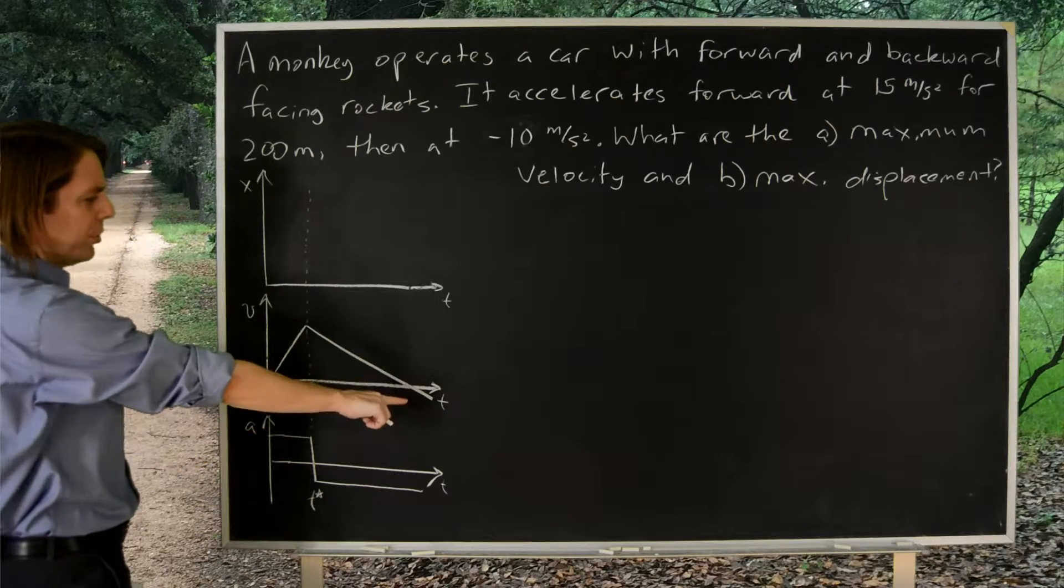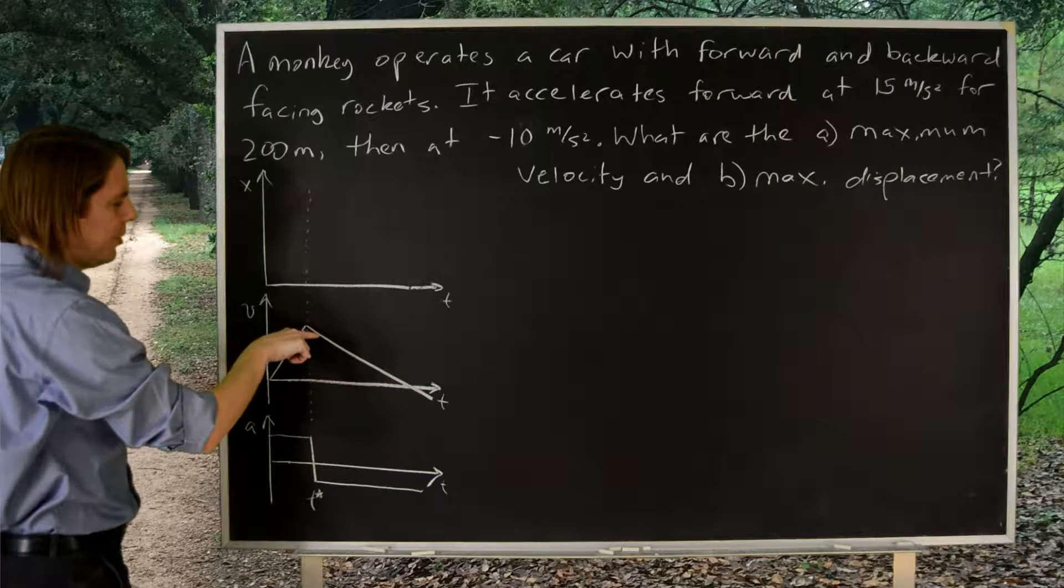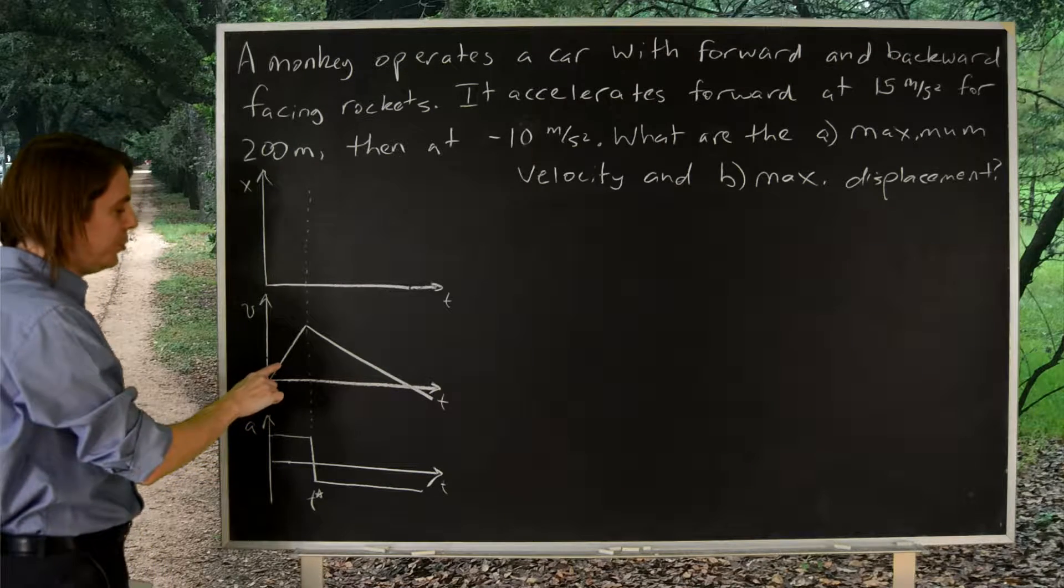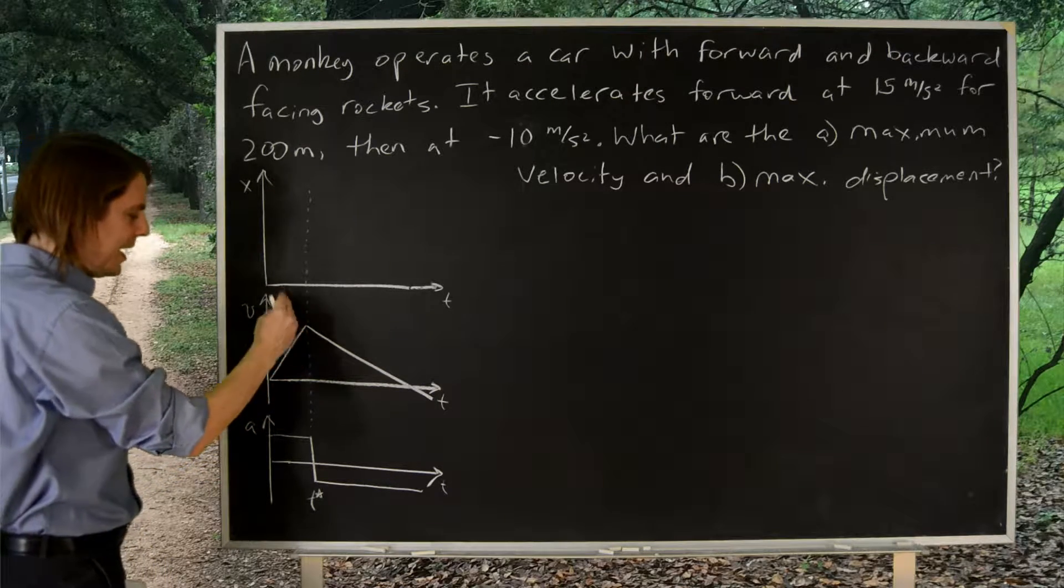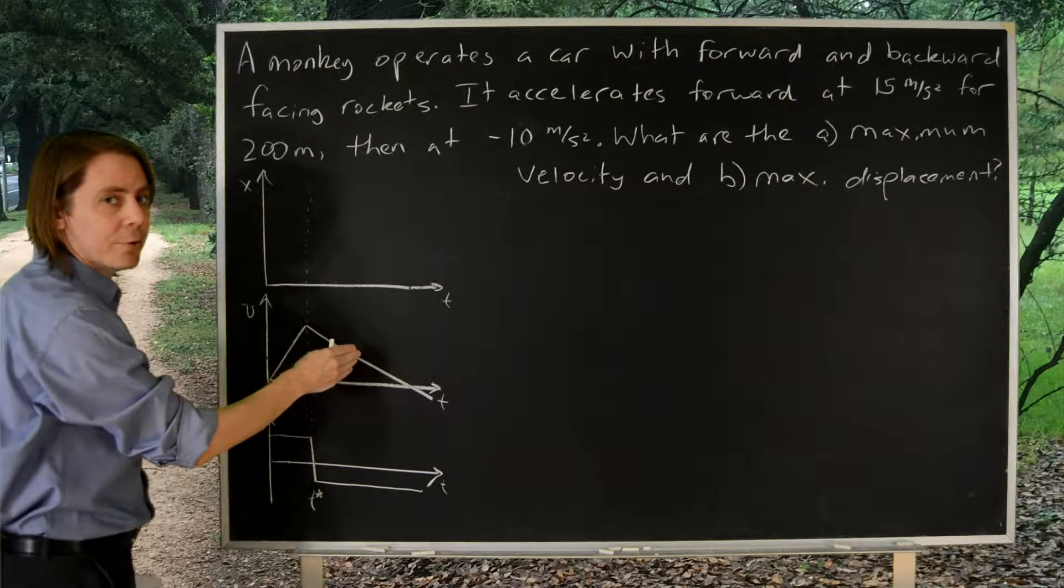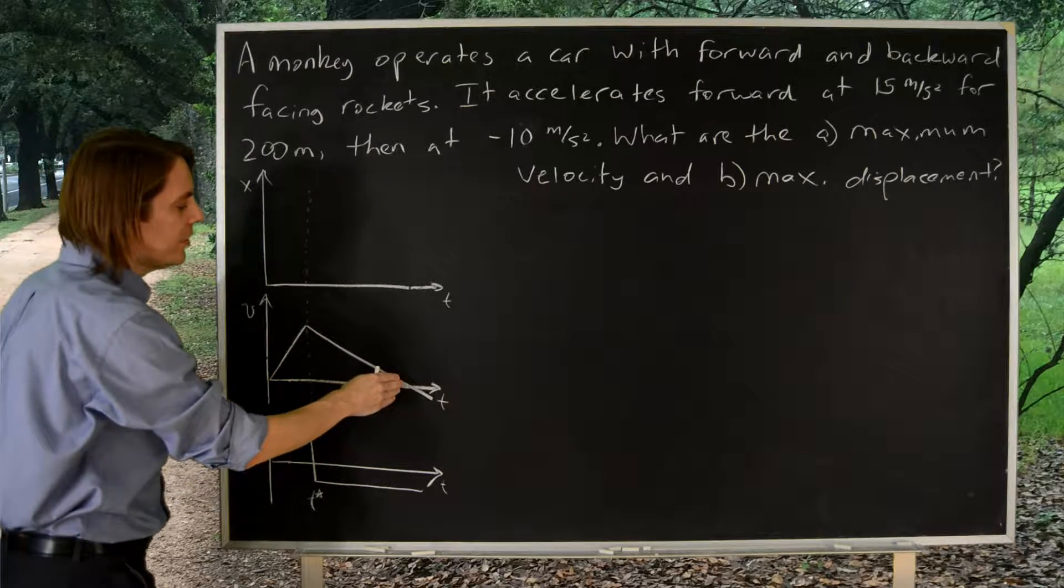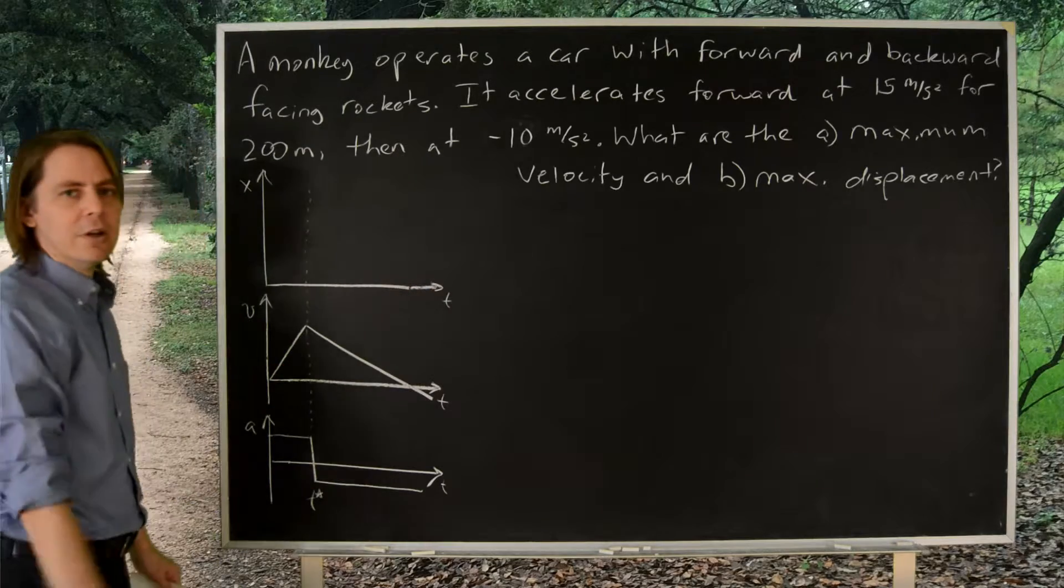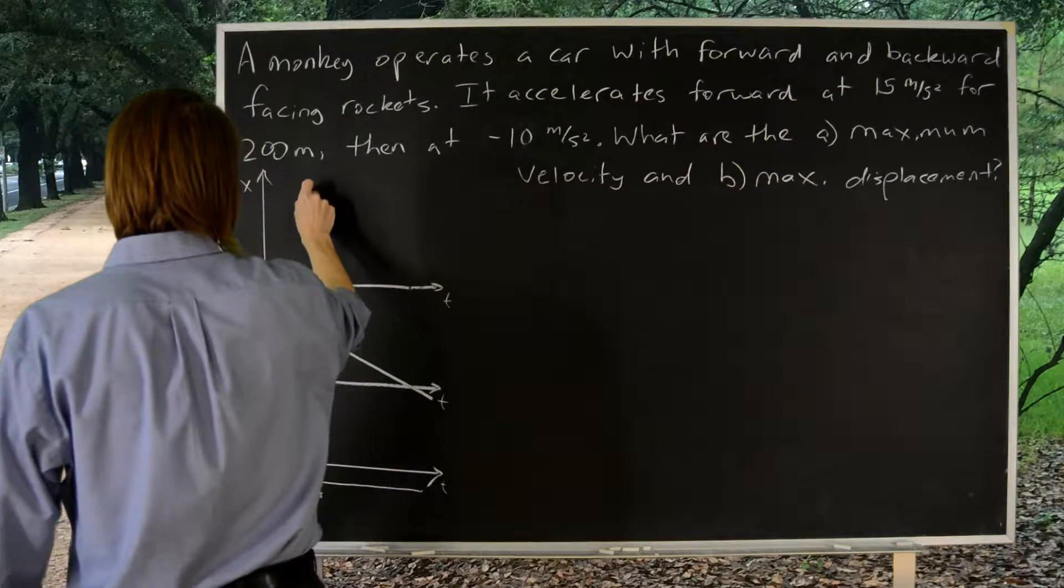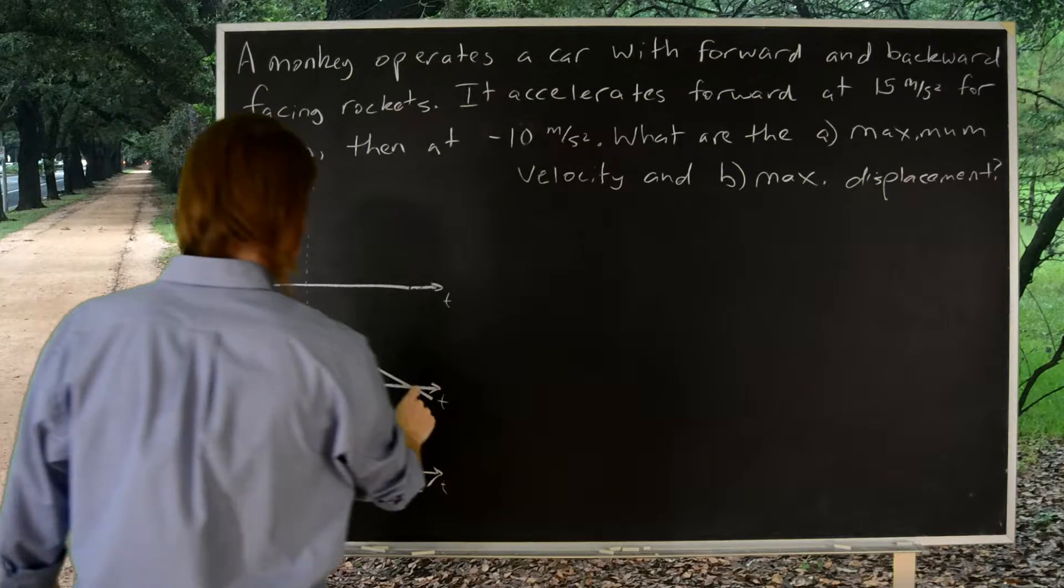Now we have a second important time point. We have the point where the velocity eventually goes negative. Here it was moving forward and speeding up. And after this point, when it starts to decelerate, it's still moving forward. It still has a forward velocity. But eventually it slows down so much that the car eventually starts to come back. So that also is an important time point that I'm going to denote with a dotted line.